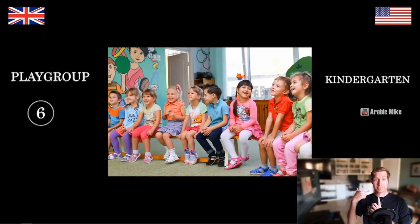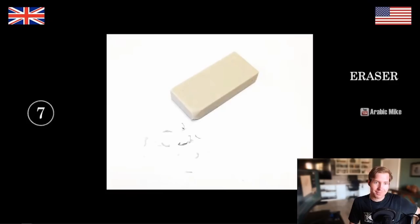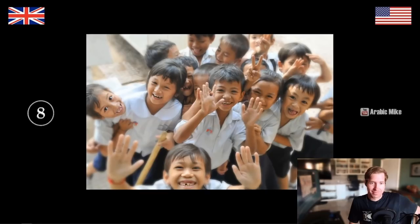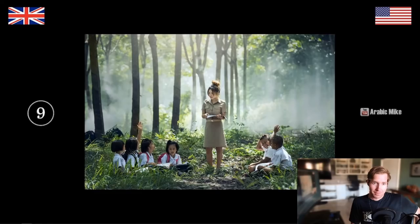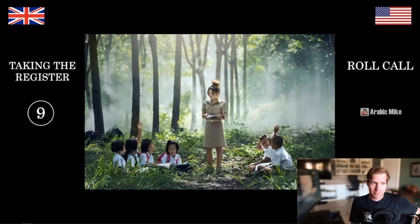We don't say kindergarten — we say preschool or playgroup, something like that. What's this? An eraser. We call that a rubber. Why is that funny? A rubber — what does a rubber mean to you? Condom! So this is a school with boys and girls — how would you describe it? We would just say mixed school. This teacher wants to check all students are there — she's going to do what? Take attendance. We would say she's taking the register.